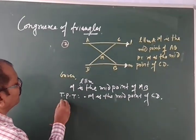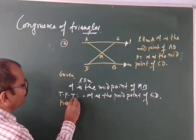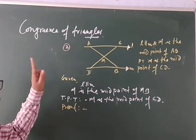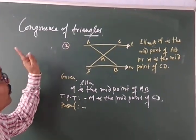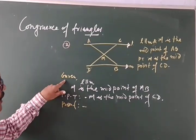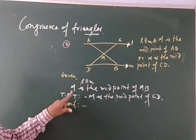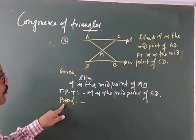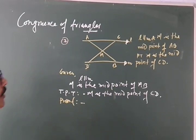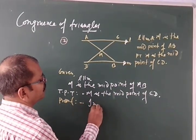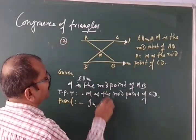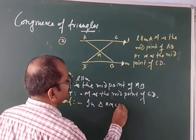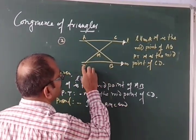After that, you have to write proof and take two triangles. Whatever question may be, especially in congruence chapter, first thing is given, secondly TPT. If it needs, then you have to construct the drawing, otherwise not. Then you have to take two triangles. That is already mentioned. Triangle AMC and triangle BMD.